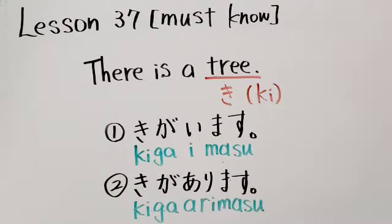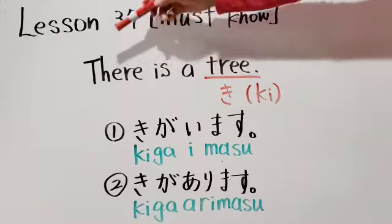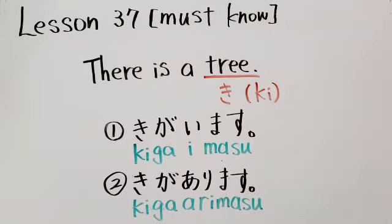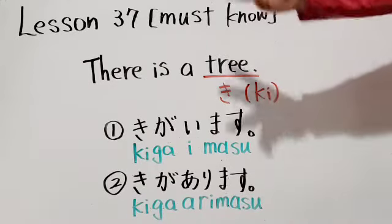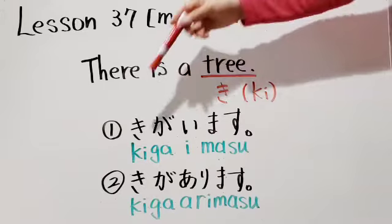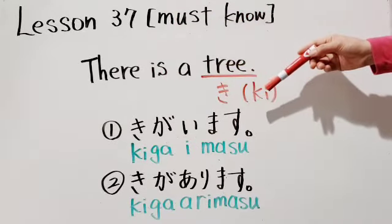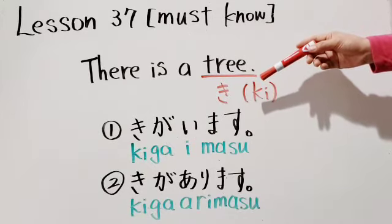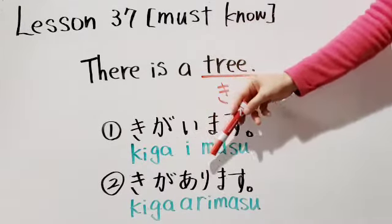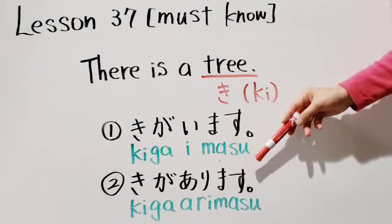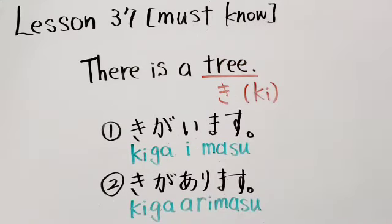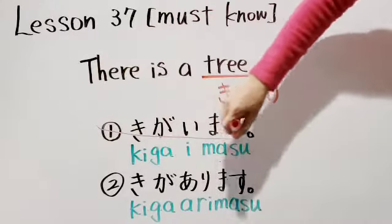Now I want you to say this sentence in Japanese: 'There is a tree.' Please choose the correct answer. You may think the answer would be 木がいます because trees are living things. But for plants, you need to use が あります instead of が います. So the answer is 木があります。